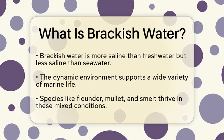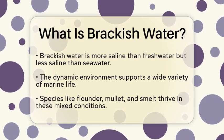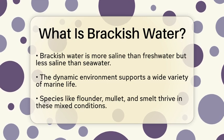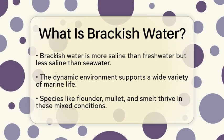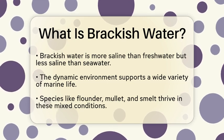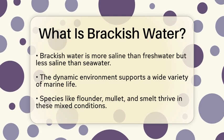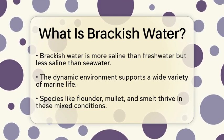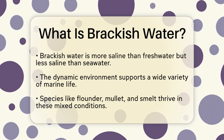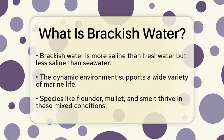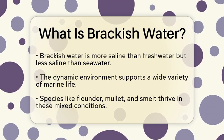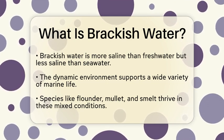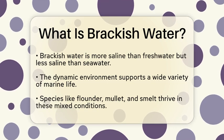In these brackish habitats, you will find an incredible range of species. Many organisms can thrive in these mixed conditions, including both freshwater and marine species. For instance, in estuaries, you might encounter fish like flounder, mullet, and smelt. These species have adapted to live in environments where salinity levels can change frequently due to tides and river flow.